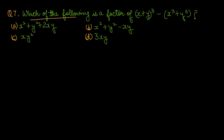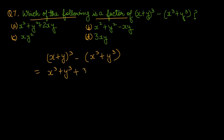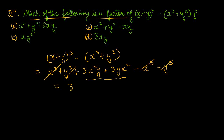Question number 7: which of the following is a factor of (x+y)³ minus (x³+y³)? हमारे पास है (x+y)³ - (x³+y³)। (x+y)³ को open करते हैं: x³ + y³ + 3x²y + 3xy²। Minus sign bracket के अंदर ले जाने पर: -x³ - y³। x³ से x³ और y³ से y³ कट गया। बचे elements से 3xy common आ गया, और अंदर बचा x + y। So 3xy is a factor — option number D is the right one.